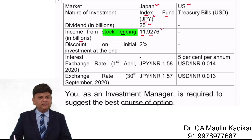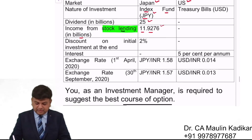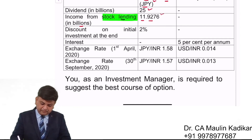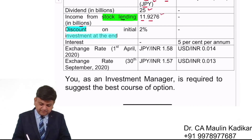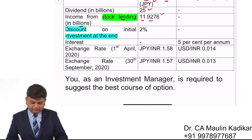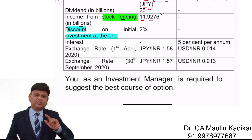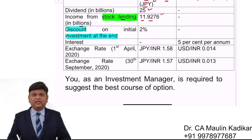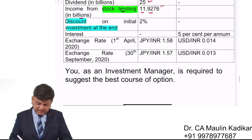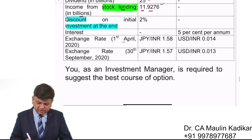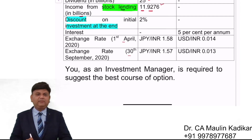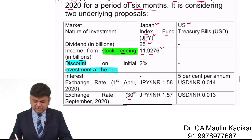There is also a 2% discount on the initial investment — meaning the price has fallen by 2% from the invested amount. The investment period runs from 1st April to 30th September. This completes the details of Option 1.